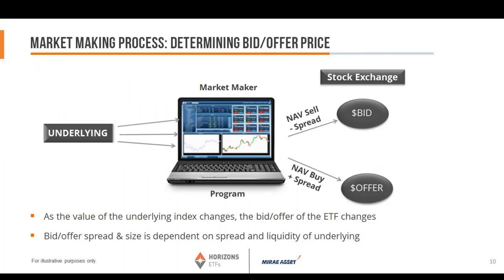How do market makers determine the bid-offer price? Starting with the underlying securities, they feed real-time pricing into a program. For something like the TSX 60, they're looking at the prices of all 60 stocks as they change every second. They then calculate the real-time net asset value — not once at 4 o'clock like a mutual fund, but every second. The program then sets the NAV minus spread as the sell price and NAV plus spread as the buy price. As the underlying index value changes, the bid-offer of the ETF changes, but ideally the spread between bid and offer remains the same.